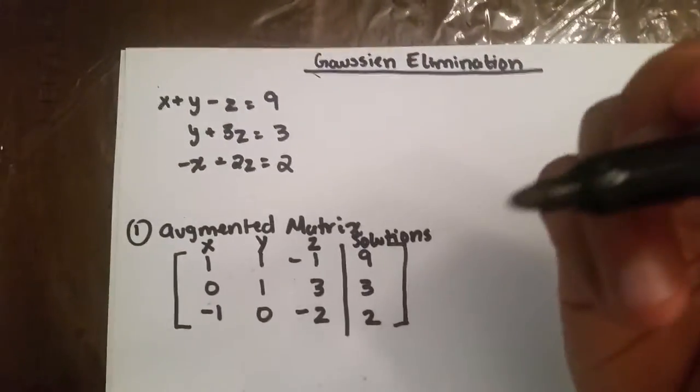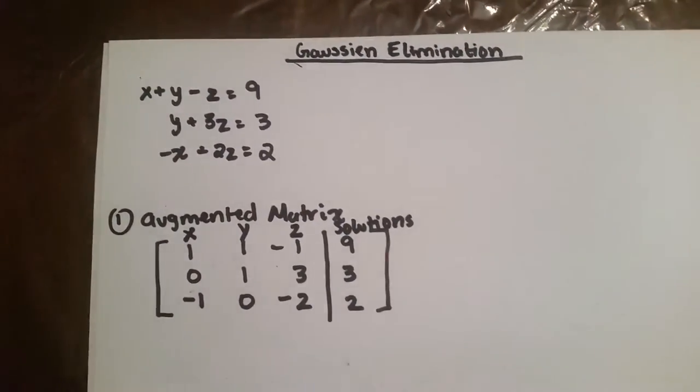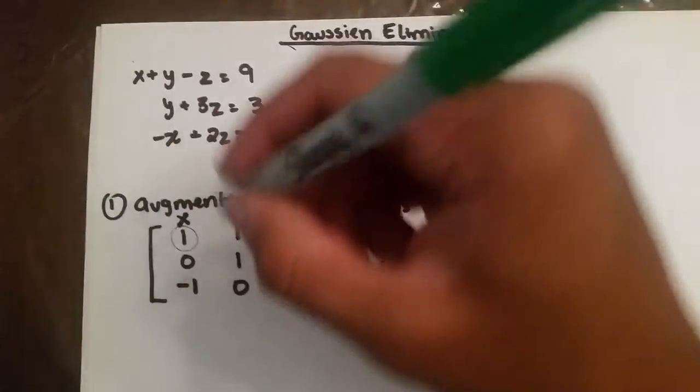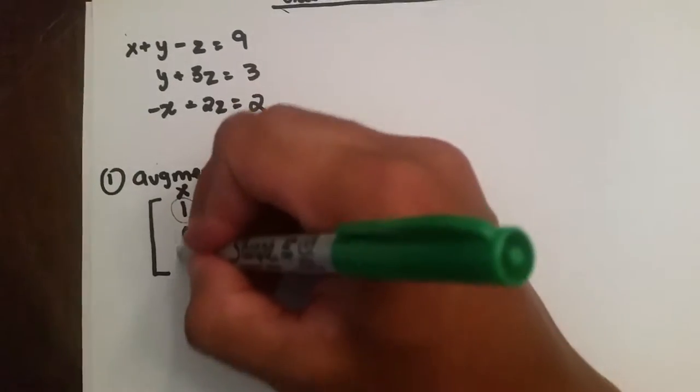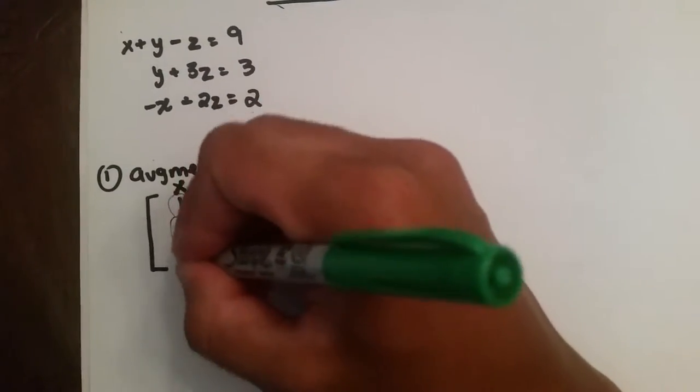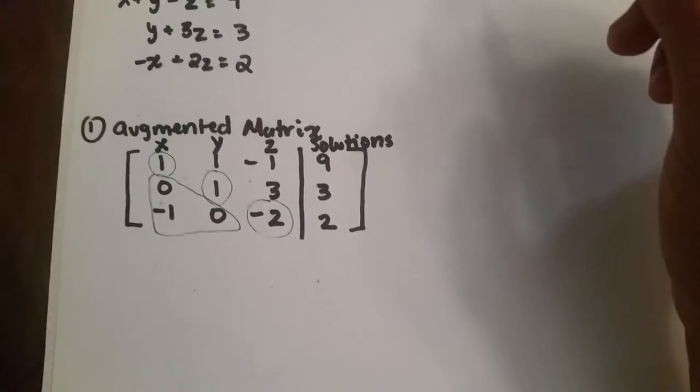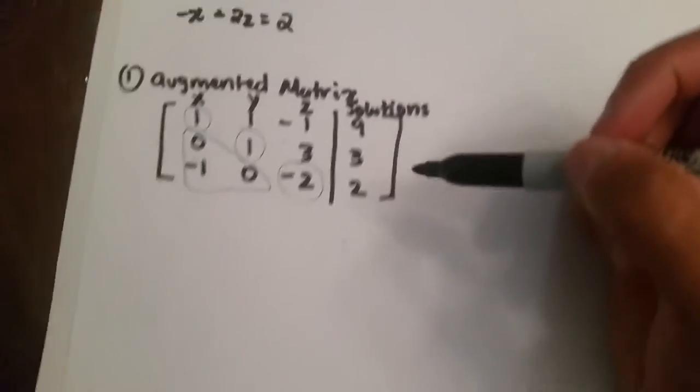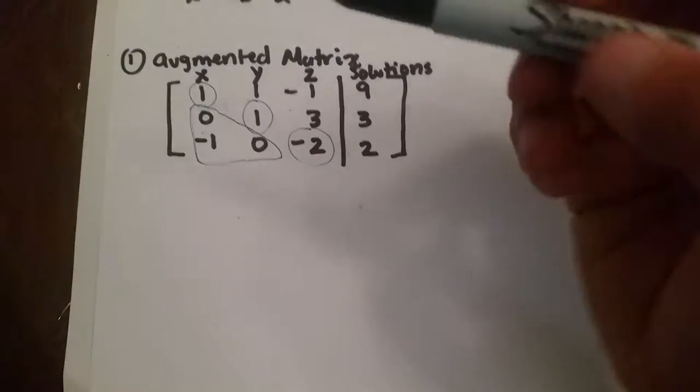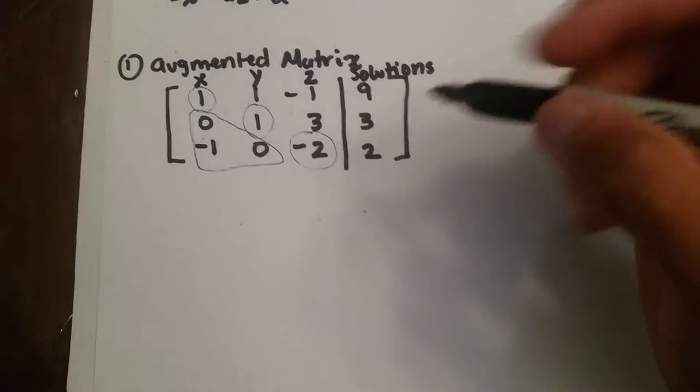So, what Gaussian Elimination basically means is that you're trying to get this to be a 1, this to be a 1, this to be a 1, and you're trying to make these three all be zeros. So, you have to add rows, you have to multiply a row by a scalar value, etc.